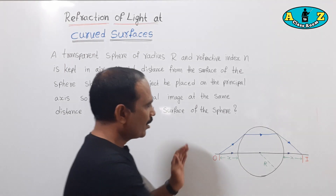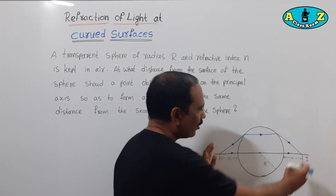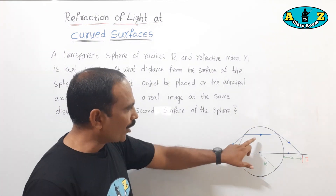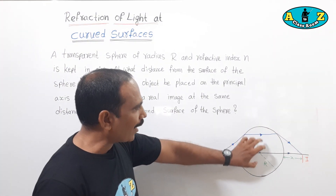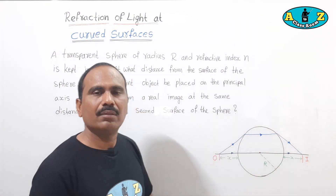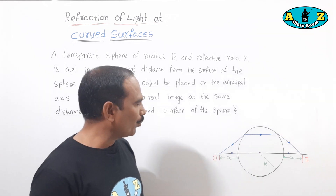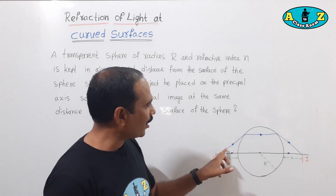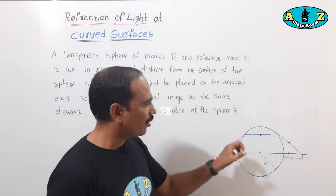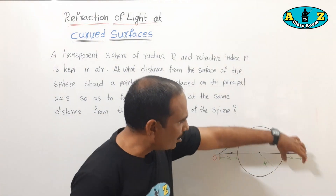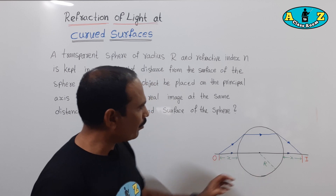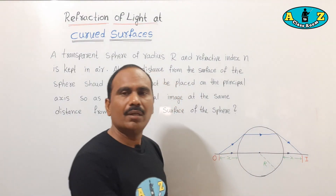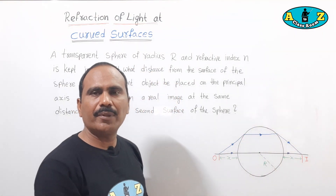To form a symmetrical picture, the two rays must be parallel to the principal axis. We are taking two rays: one ray passing through the principal axis and another ray at a certain angle. Object distance and image distance are equal, giving a symmetrical picture.